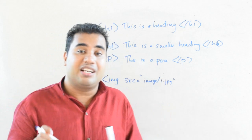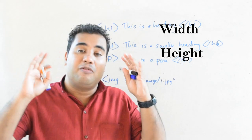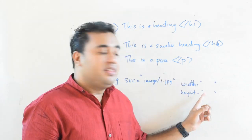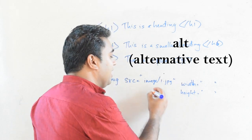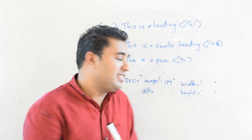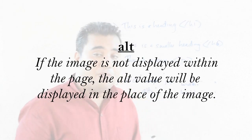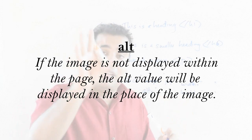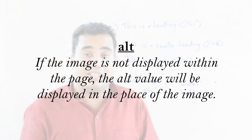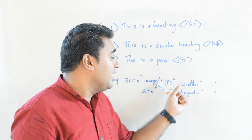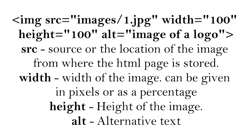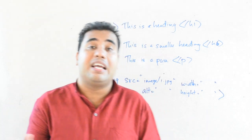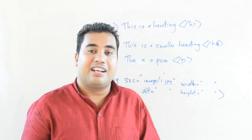Another attribute for the image tag is width and height, which defines the size of the image — values are read in pixels. There is also the alt, or alternative text, attribute: if the image does not load properly, the alt text will be displayed in its place. There should be a space between attributes when writing HTML code. For the image tag there is no separate end tag — you put everything within a single tag.